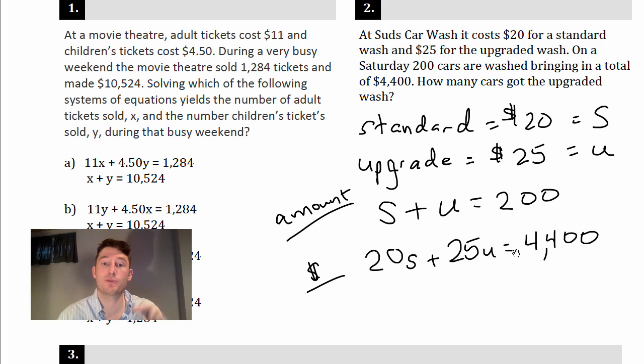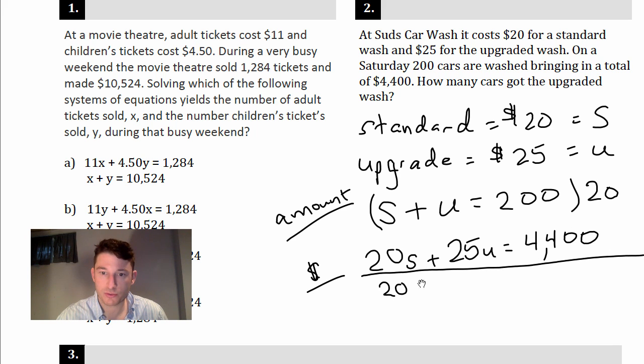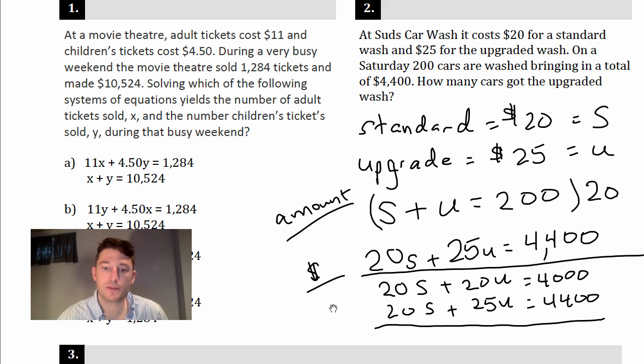All right, so now we've got two different equations, and hopefully from the previous lessons you know how to solve when we have two different equations. So we need to make one look like the other. Since I want to solve for U, the upgraded ones, I want to multiply everything by 20. So let me rewrite the equations below: 20S plus 20U equals 4,000. I'll rewrite the bottom one, our price one: 20S plus 25U equals 4,400 bucks.